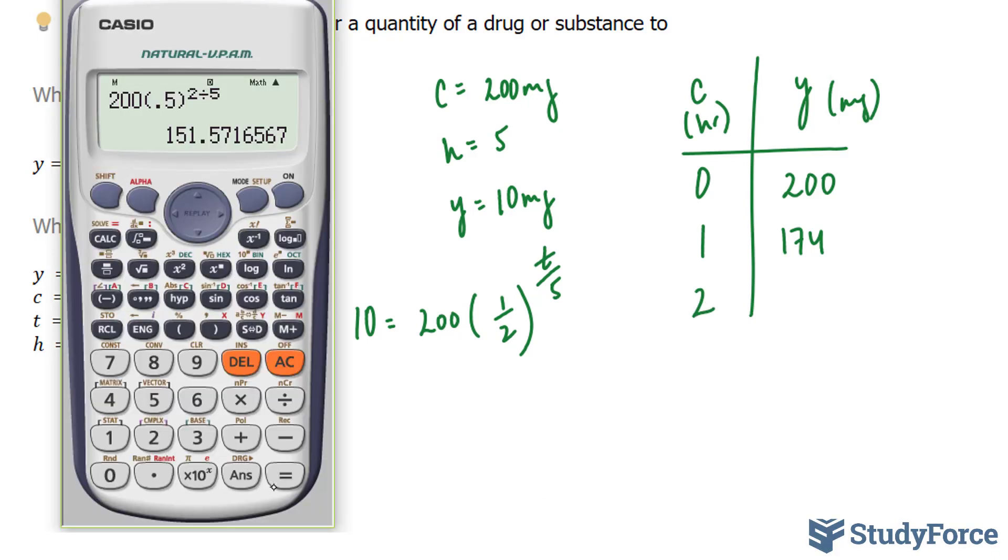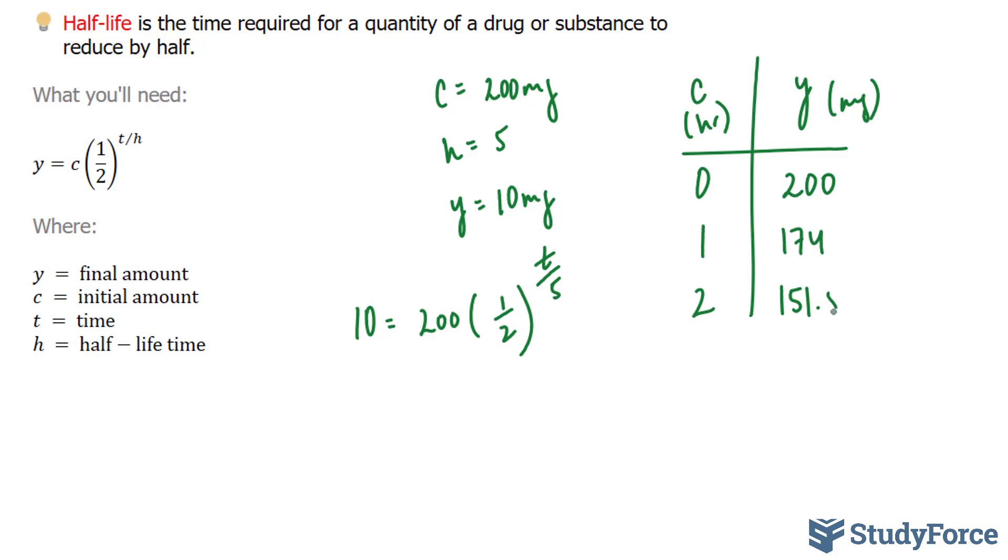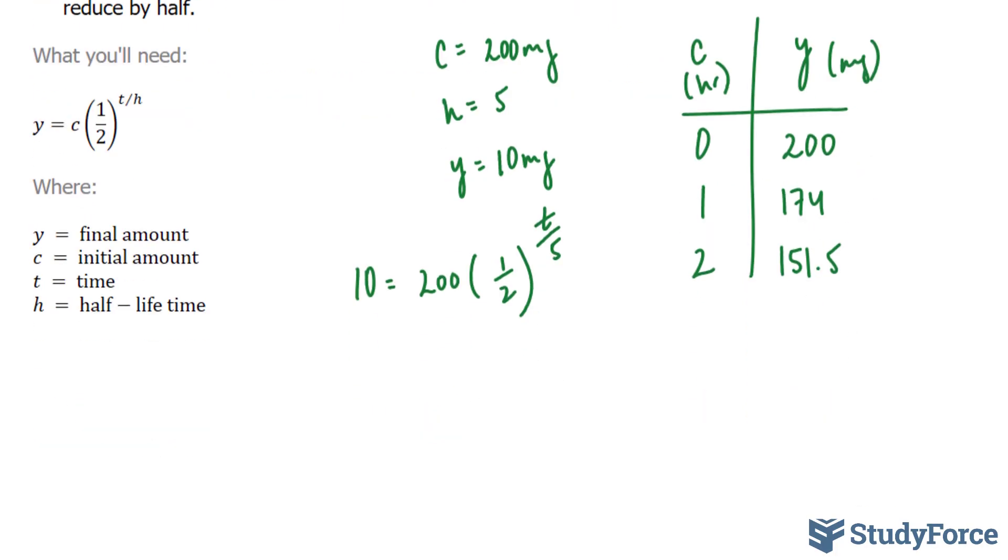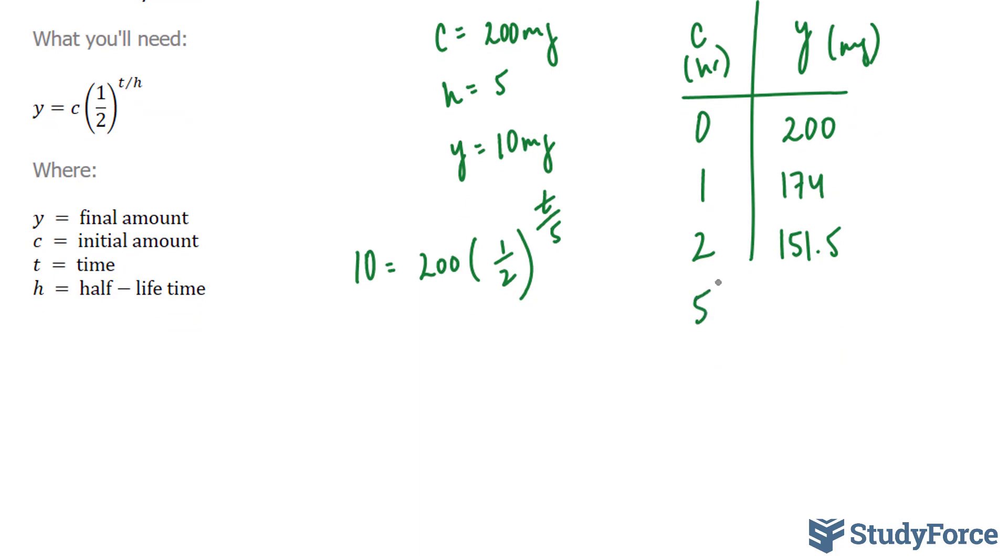Let's see what happens after two hours. After two hours, we have 151.5. Now according to the question, at five hours, the half-life is reached. So at five, we know it's going to be 100.